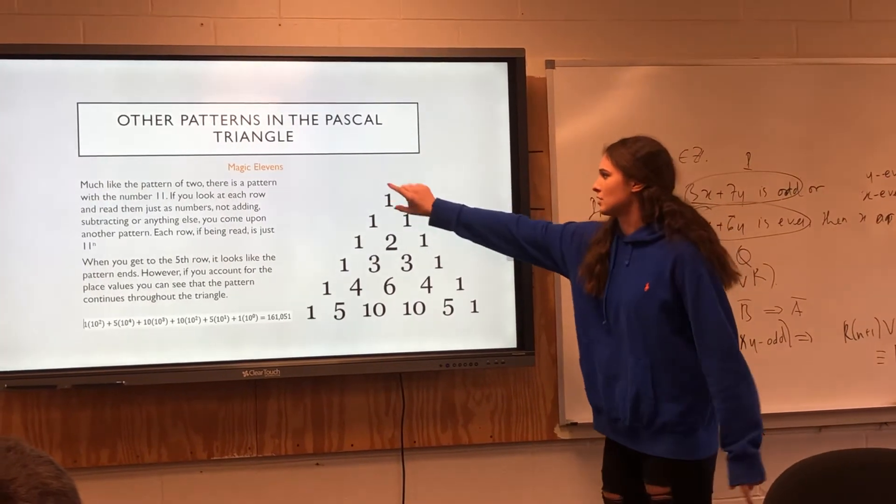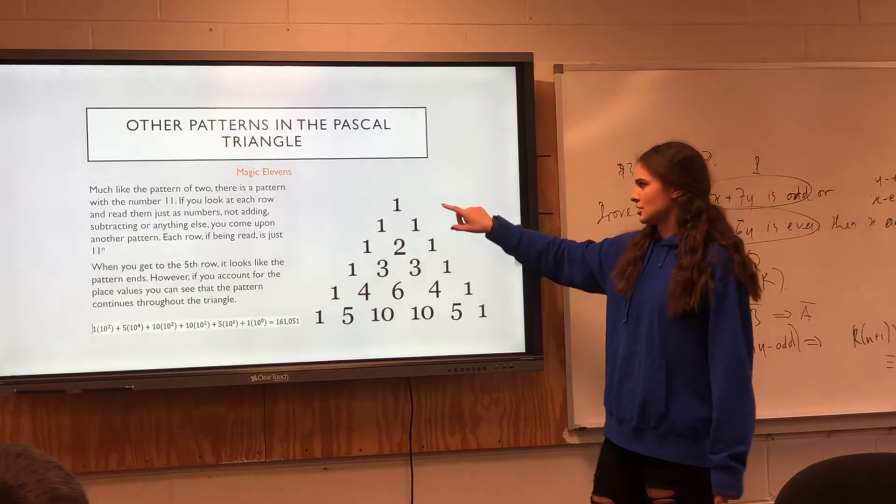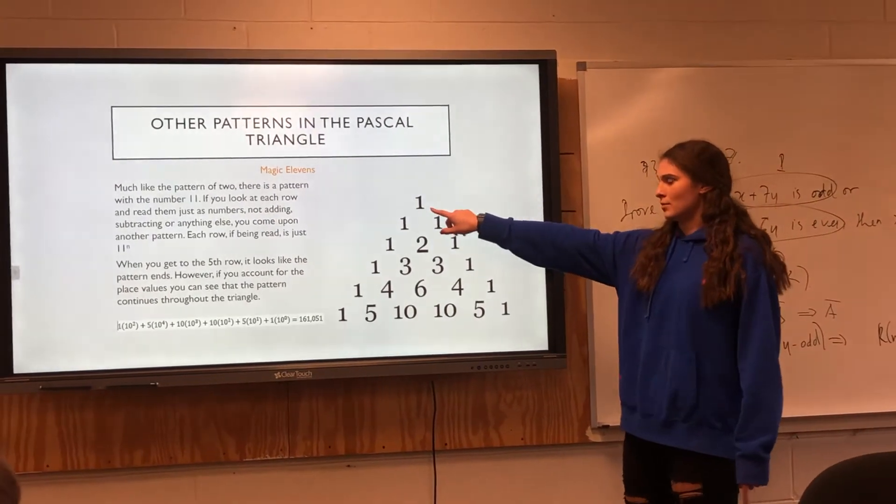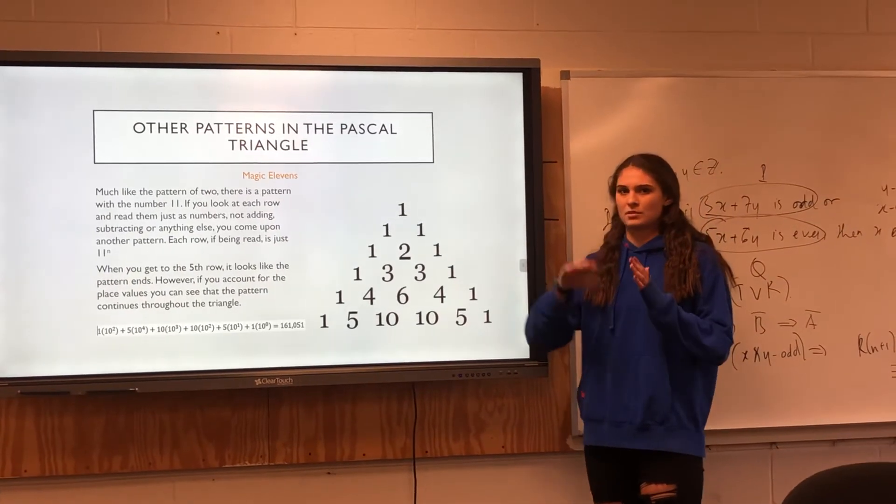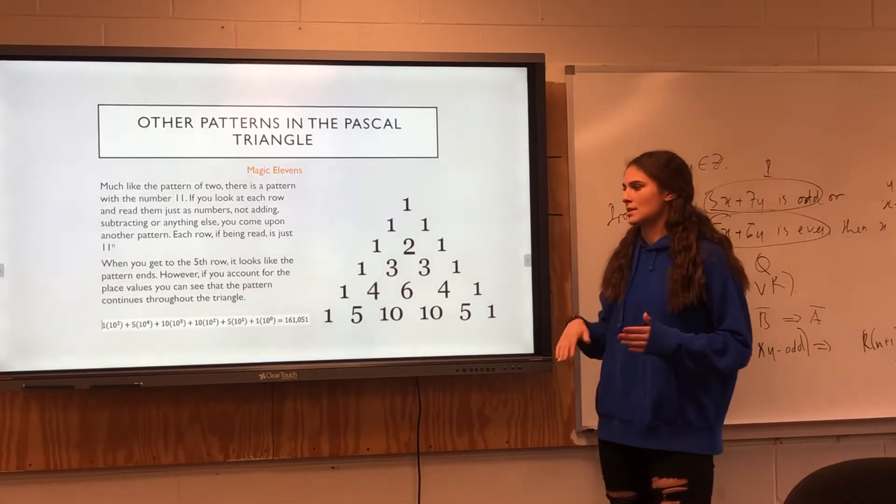If you take the sum of each row going across, it's just two to the n. So, one equals two to the zero power, which is just one. One plus one equals two, and that's two to the first power. That just keeps on going down.